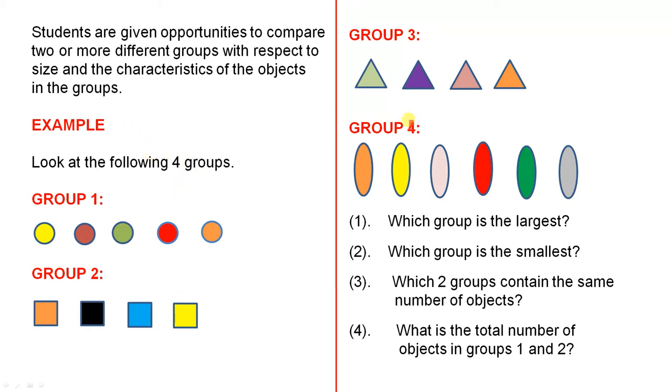Look at the following four groups. So we have Group 1, Group 2, Group 3 and Group 4. We can ask such questions as, which group is the largest, which group is the smallest, which two groups contain the same number of objects, and what is the total number of objects in Groups 1 and 2.